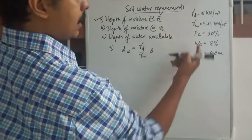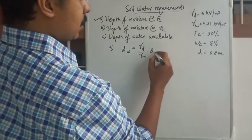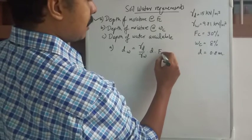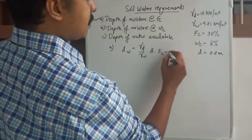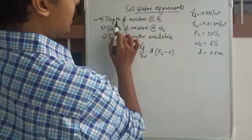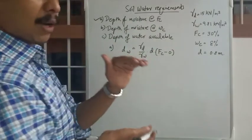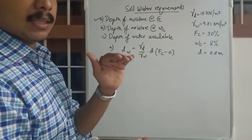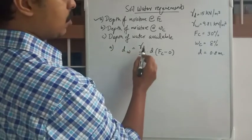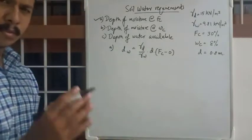Since the question asks for depth of moisture at FC — from zero up to FC — the equation becomes: dw = (γd / γw) × d × (FC − 0), which simplifies to dw = (γd / γw) × d × FC.